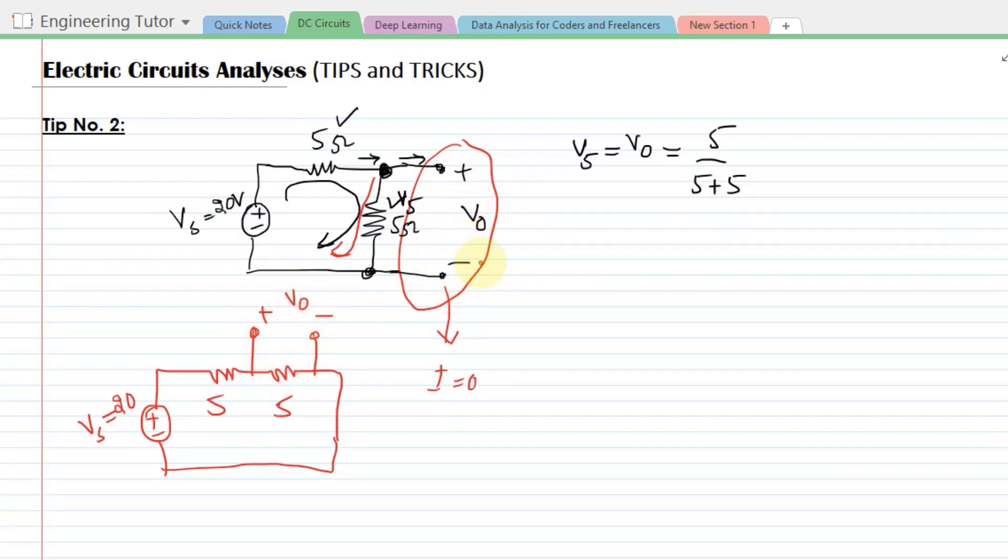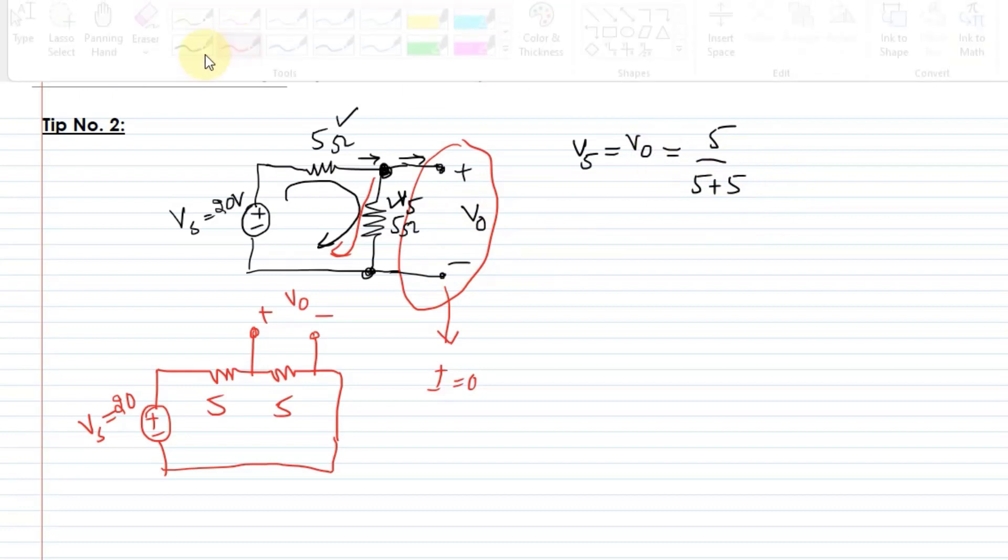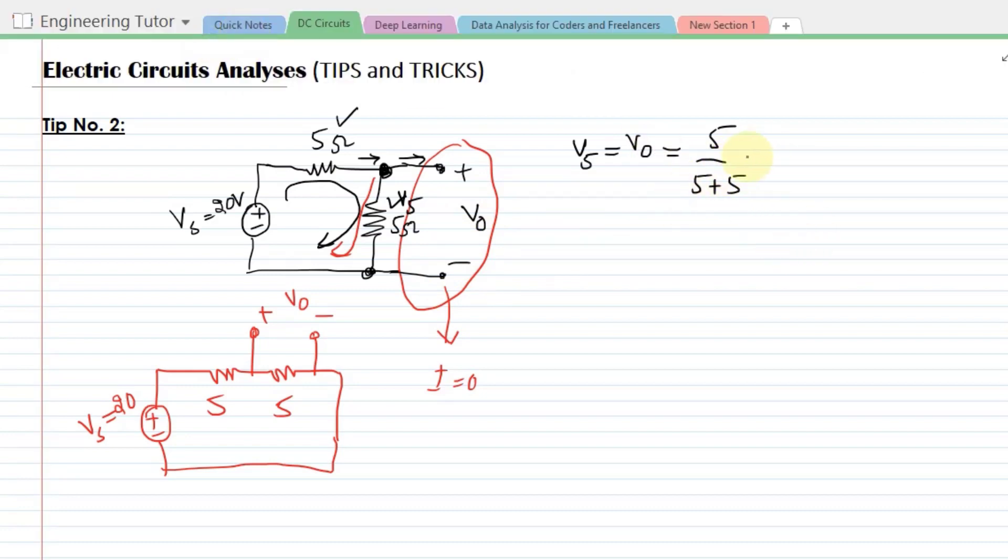So 5 divided by 5 plus 5, multiplied by the source voltage which is 20. So 5 divided by 10, multiplied by 20, and this will give me the answer of this circuit here.